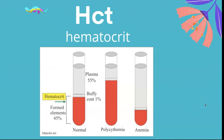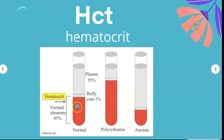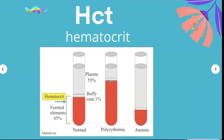HCT is hematocrit — the percentage by volume of how much of your blood contains red blood cells. Normal hematocrit is about 45% formed elements and plasma is about 55%. If hematocrit is too high, it indicates polycythemia. If it's below normal, it indicates anemia.